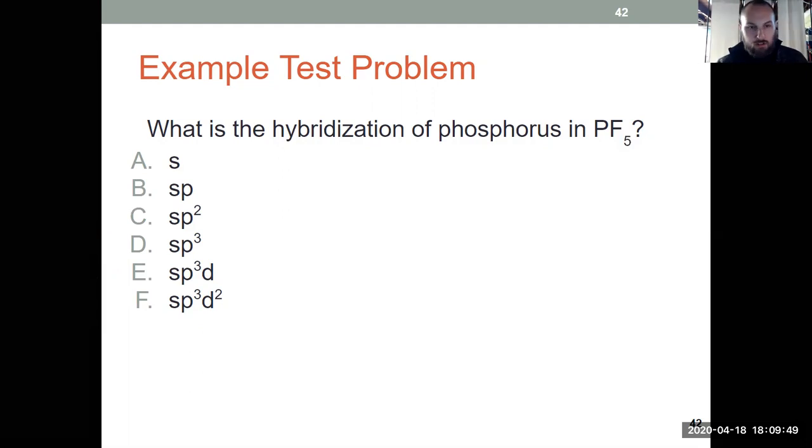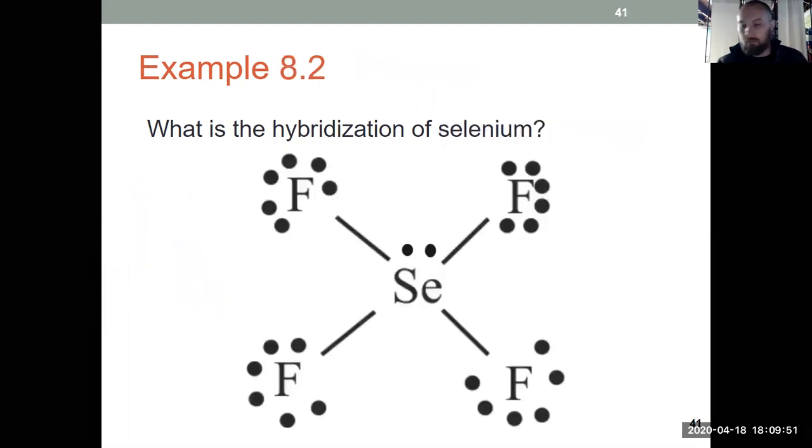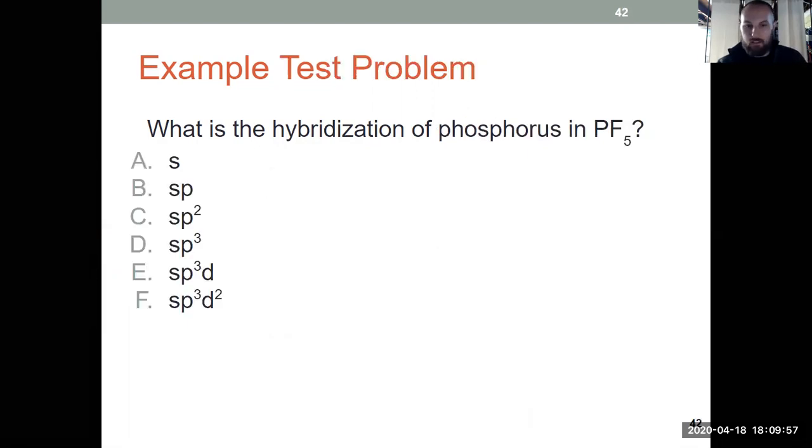But that kind of shows us two different molecules. There's multiple ways we could get the same hybridization. This one had lone pairs, PF5 didn't. Treat all your regions of electron density the same, and you'll be golden to determine hybridization, which is a key idea from chapter eight.